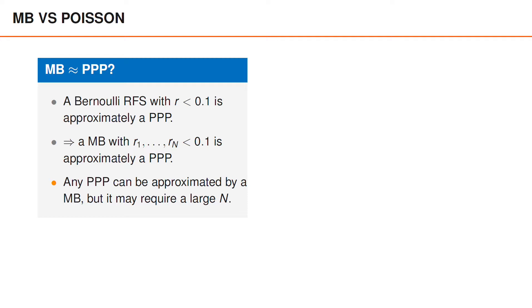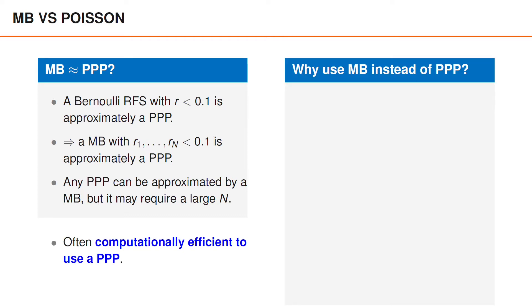Based on these observations, the two processes really do seem very similar. Further, when we can use a Poisson point process to model our uncertainties, it tends to yield more computationally efficient solutions due to some of its properties. Based on these observations, it may be tempting to use Poisson point processes as often as possible. So why do we care about multi-Bernoulli processes when Poisson point processes have these advantages?